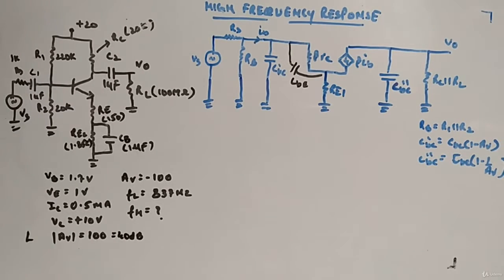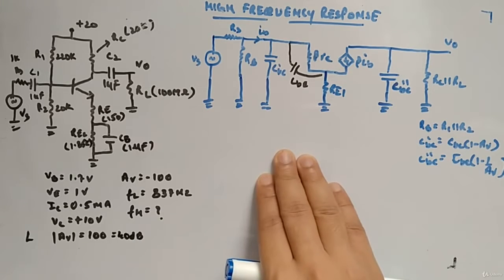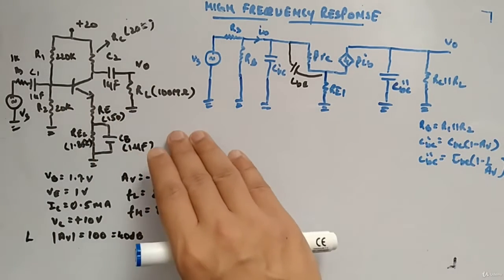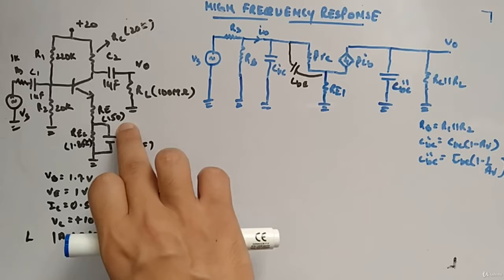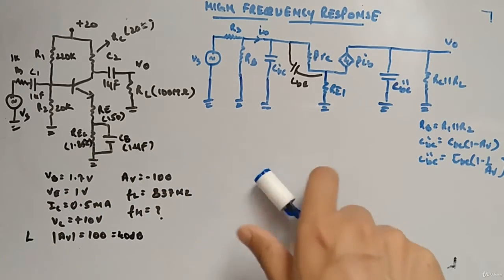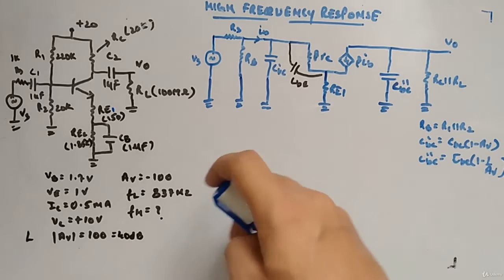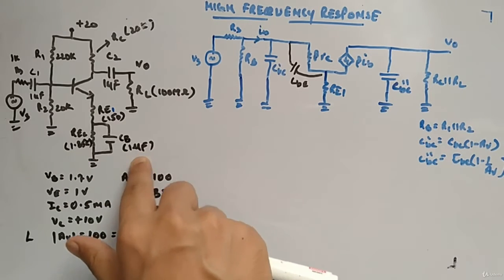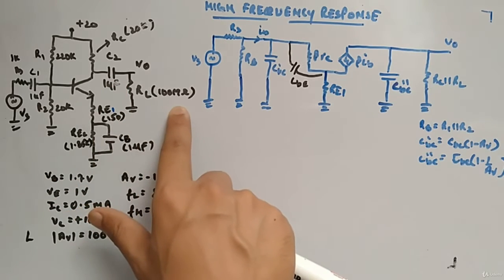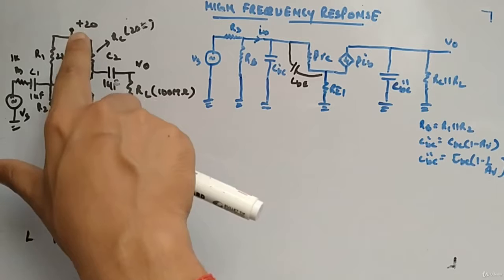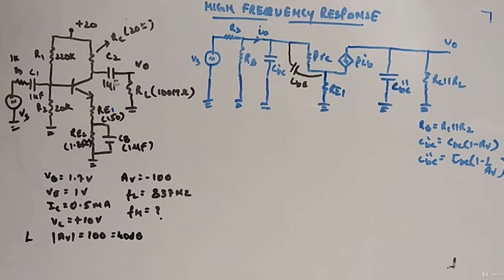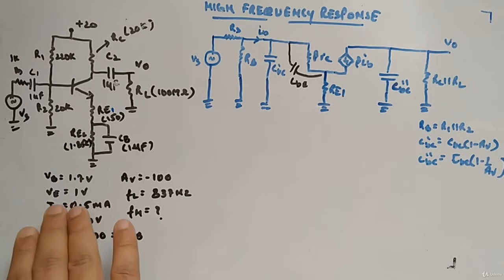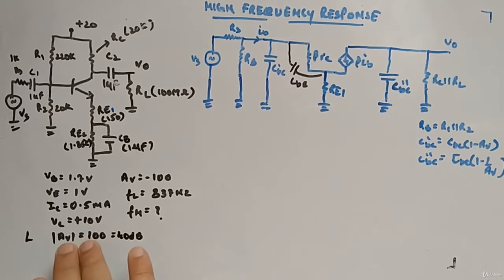Let's look at the example we were tackling before. The circuit has R1=220kΩ, R2=20kΩ, RE1=150Ω, RE2=1.85kΩ, CB=1μF, C2=1μF, RL=100MΩ, RC=20kΩ, 20V supply, RS=1kΩ, C1=1μF, VS source with 20kΩ. From our earlier calculations: VB=1.7V, VE=1V, IC=0.5mA, VC=+20V, and AV=100.